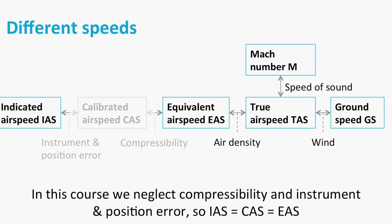Then we saw that the relation between equivalent air speed and true air speed depends on the air density. And if you want to know the ground speed, you need to take the wind into account.